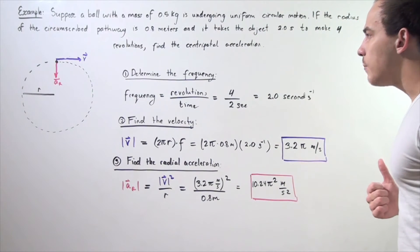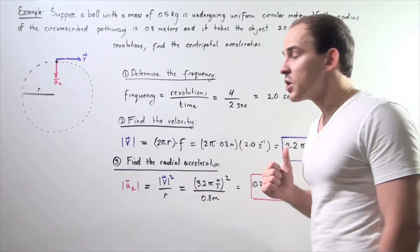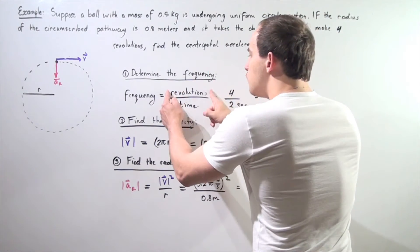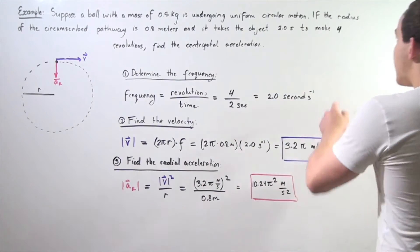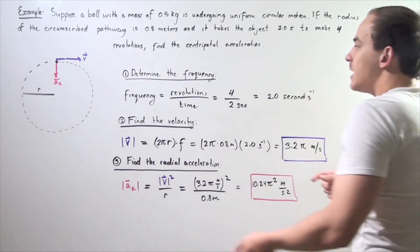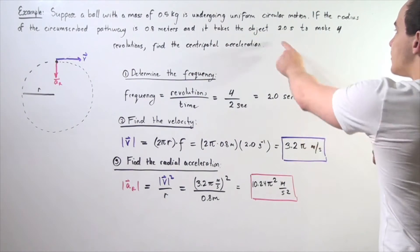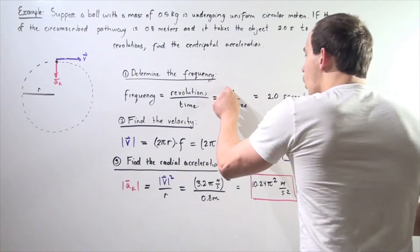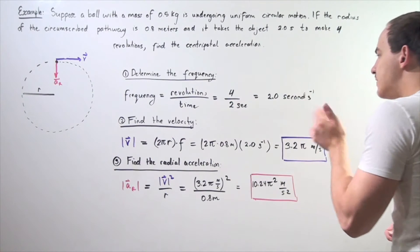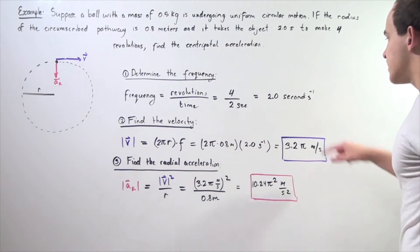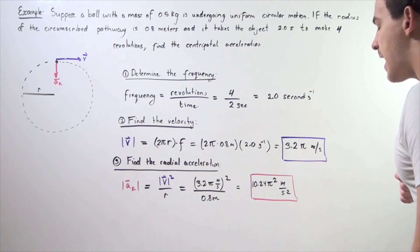Step one: determine the frequency. The formula for frequency is the number of revolutions, which in this case is four revolutions, divided by the time it takes to make those four revolutions, which is two seconds. Four divided by two seconds gives us two seconds to the negative one power.